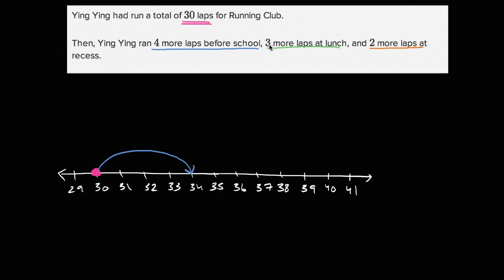So those four laps before school take us from 30 to 34. And then she runs three more laps at lunch. So then from the 34, she's going to go one, two, three to 37. So that's what those three more laps at lunch do for us.